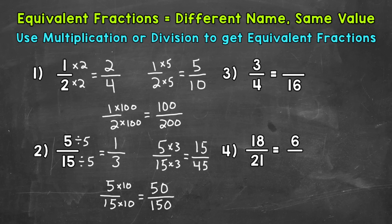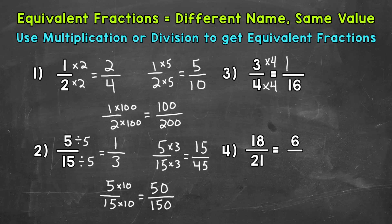Let's move on to numbers three and four, where we have a given fraction and part of an equivalent fraction, and we need to find the missing part. For number three, we have three fourths equals how many sixteenths? We're given both denominators: 4 and 16. We need to figure out how to get from 4 to 16 — well, 4 times 4 equals 16 — then do the same to the numerator: 3 times 4 gives us 12. So 12 sixteenths is equivalent to three fourths.